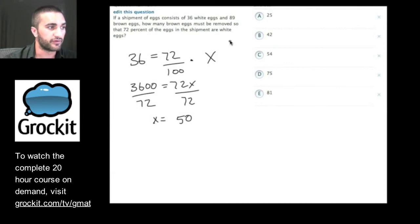So if we have a total of 89 brown eggs, and we need to get to a point of a total of 50 eggs. How many brown eggs do we need to get rid of? So 36 plus 89 is what, everybody? Go ahead and type it in the chat box.